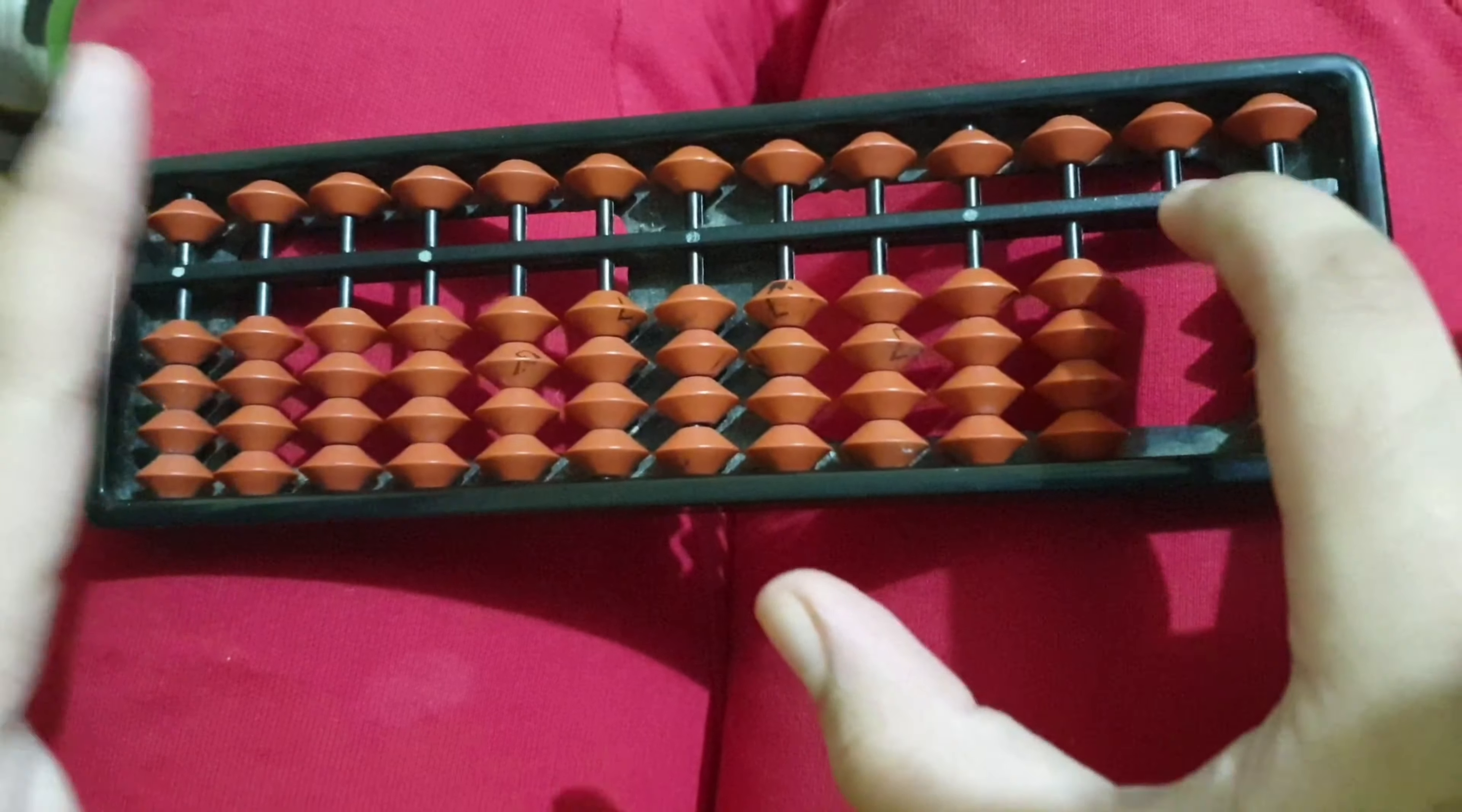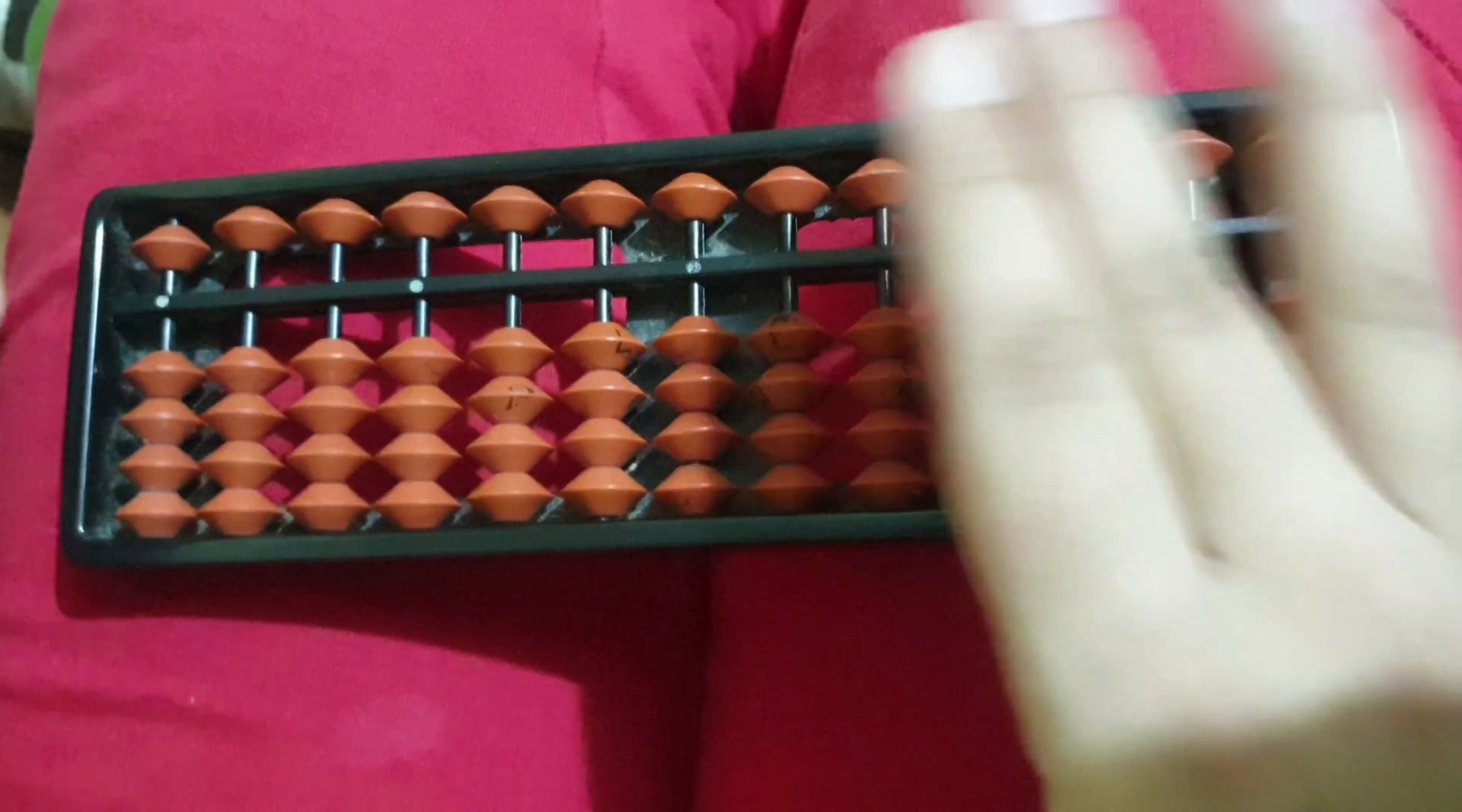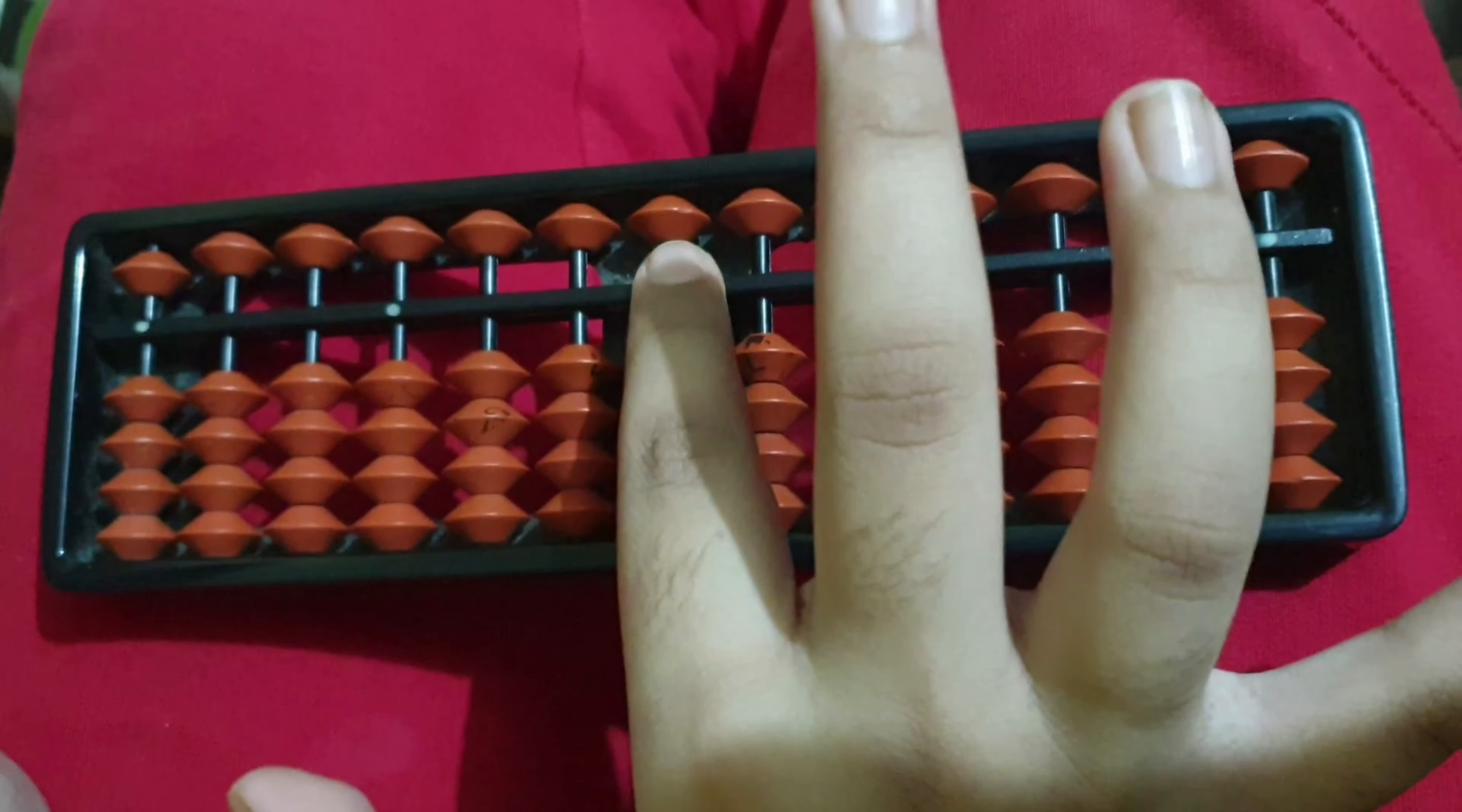This is how a real abacus looks, but just one line is broken because I just broke it. But we don't need this because it is the negative side. We'll just focus on the positive side which starts from here to here.